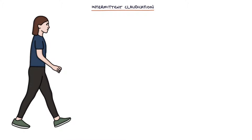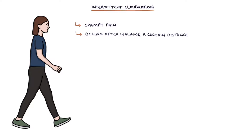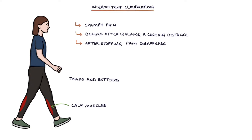Let's talk in more detail about intermittent claudication. Peripheral arterial disease presents with intermittent claudication. Patients may describe a crampy type pain that predictably occurs after walking a certain distance. After stopping and resting, the pain will disappear. The most common location is the calf muscles, but it can also affect the thighs and buttocks.